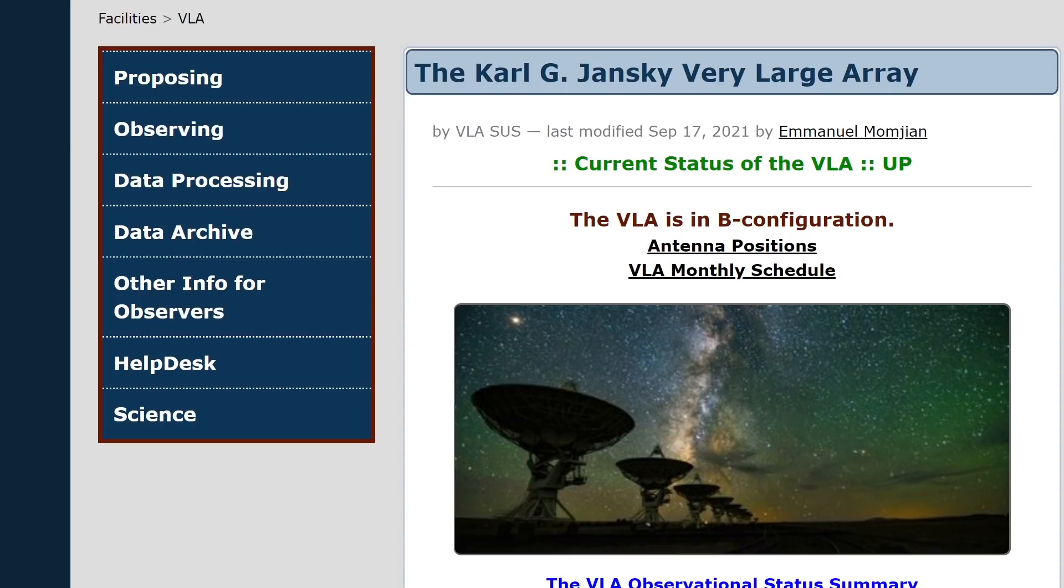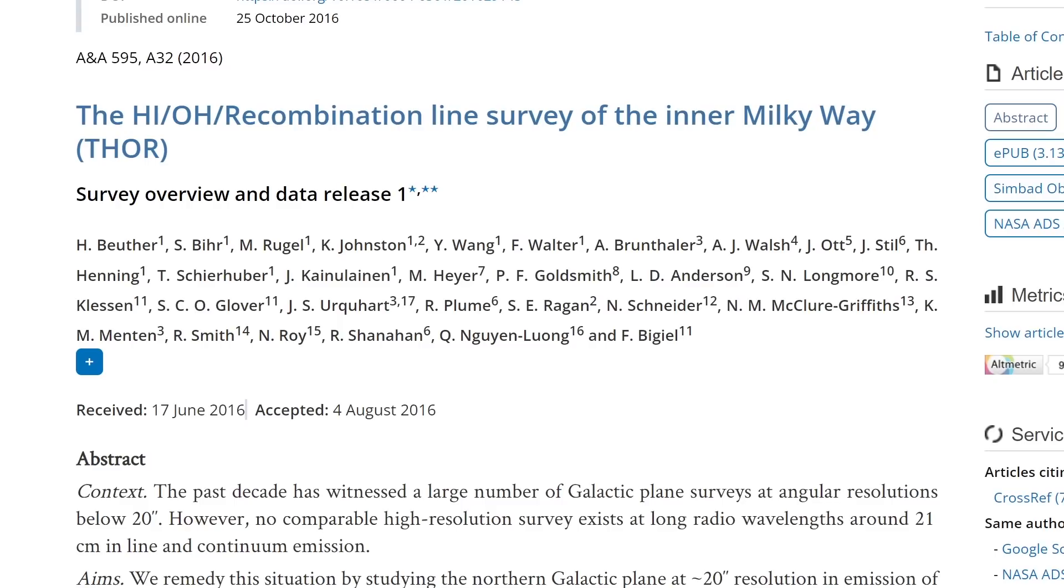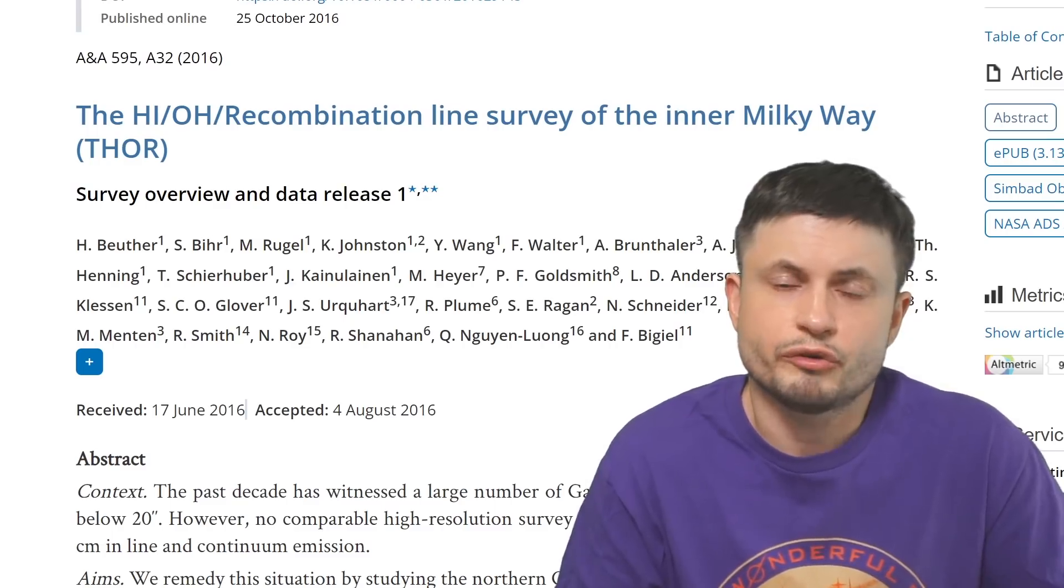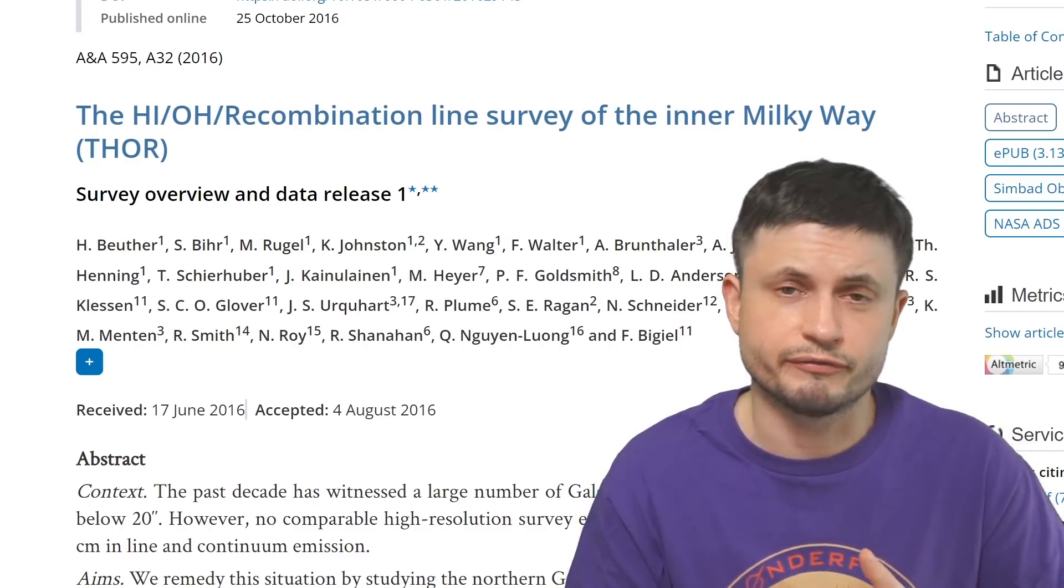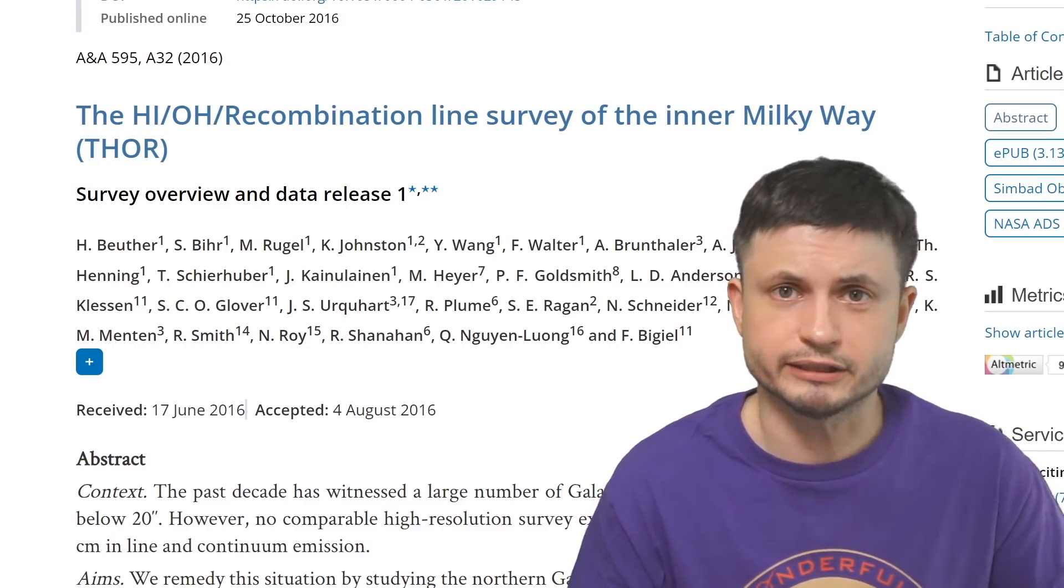In this case, they use the data from the survey known as THOR, based on the Karl G. Jansky Very Large Array data, that was combined into this survey that you can also find in the description below. And what this survey did was essentially look for various hydrogen clouds, various gas clouds, around our galaxy.